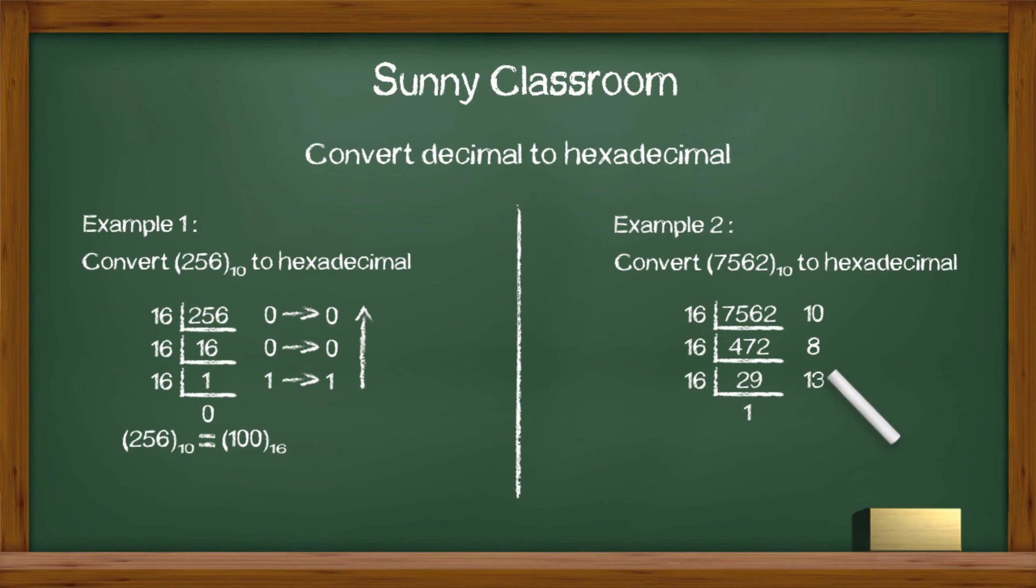Step 3. Divide 29 by 16 again. We get 1 and the remainder is 13.